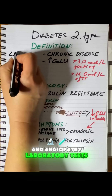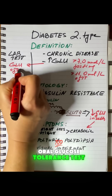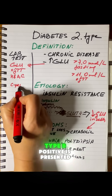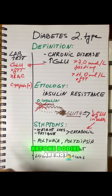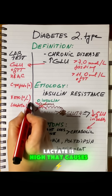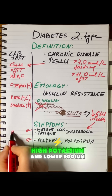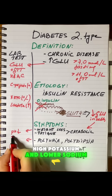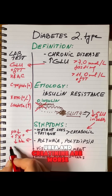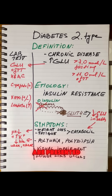Laboratory tests: fasting blood glucose is high; oral glucose tolerance test is higher; glycated hemoglobin is elevated; C-peptide is present; ketone bodies are not significantly elevated; lactate is high, causing hyperosmolar acidosis; potassium is high and sodium is lower; renal parameters such as urea and creatinine are worsened; albuminuria and glucosuria are present.